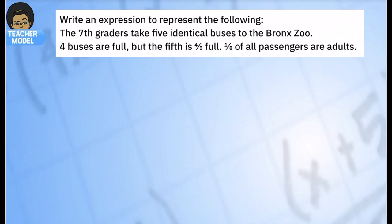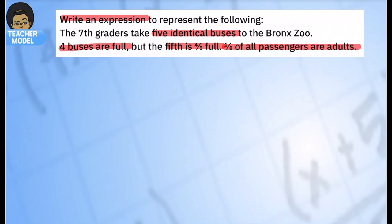In this problem we're going to figure out how to write an expression that represents this situation. We have seventh graders taking five buses to the Bronx Zoo. Four buses are full, the fifth is almost full — four-fifths full — and we know one-eighth of all passengers are adults. Our goal is to write an expression.